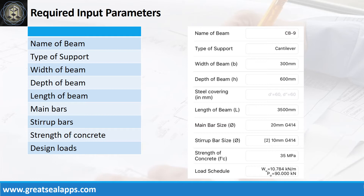Main bars: 20 mm bar at grade 414. Stirrup bars: 10 mm bar at grade 414. Strength of concrete: 35 MPa. Factored uniform load: 10.784 kN per meter. And factored concentrated load: 90 kN.